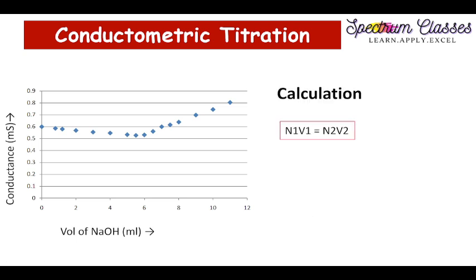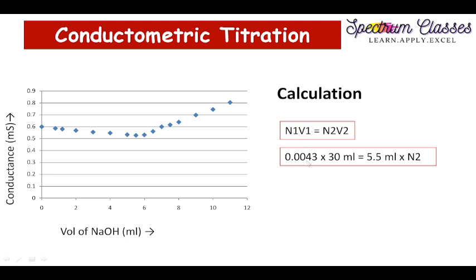So the concentration of NaCl is 0.0043 normal, the volume taken is 30 ml, and the volume consumed for AgNO3 is 5.5 ml from the graph. N2 is the normality of AgNO3 which we have to calculate. If we multiply the normality by 170 (the equivalent weight), then we will get the strength of AgNO3 in grams per liter. This is how we are going to calculate the concentration of AgNO3.